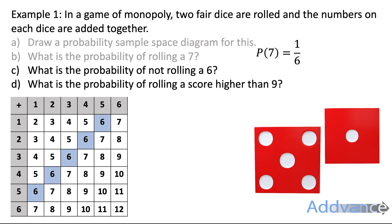Now, question C, what is the probability of not scoring a 6? What we'll do is we'll look at the probability of scoring a 6 and then subtract that from 1, because the probability of something not happening is 1 minus the probability of something happening. The probability of scoring a 6 is 5 out of 36.